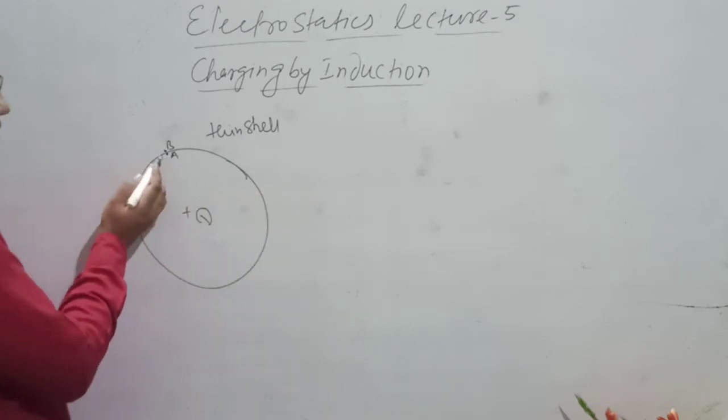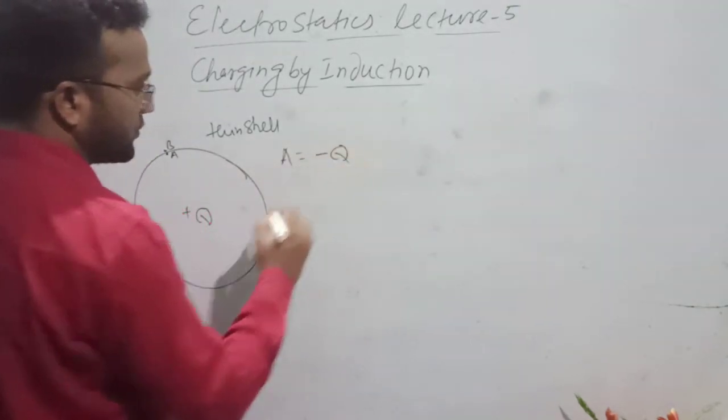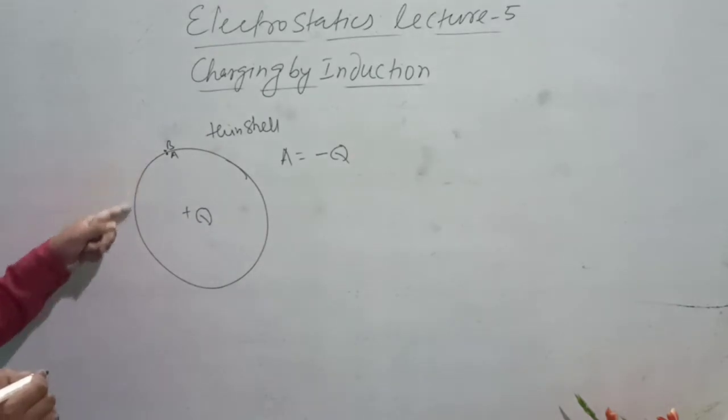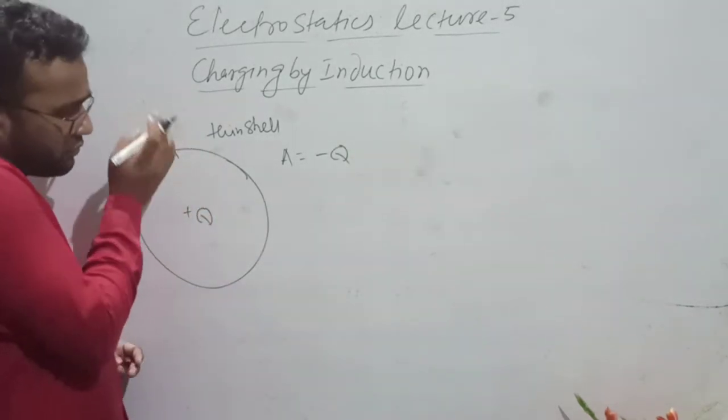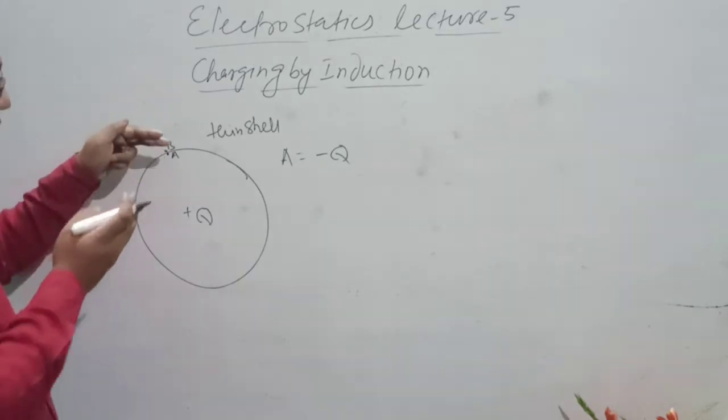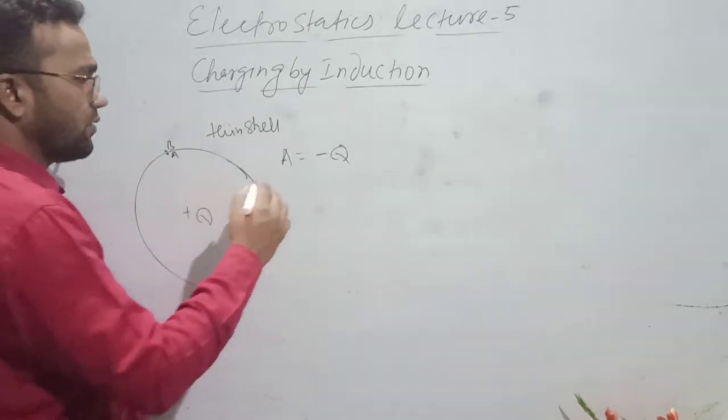What will be the charge on A? This is very thin. These are the layers - the inner surface and the outer surface. This is point B.